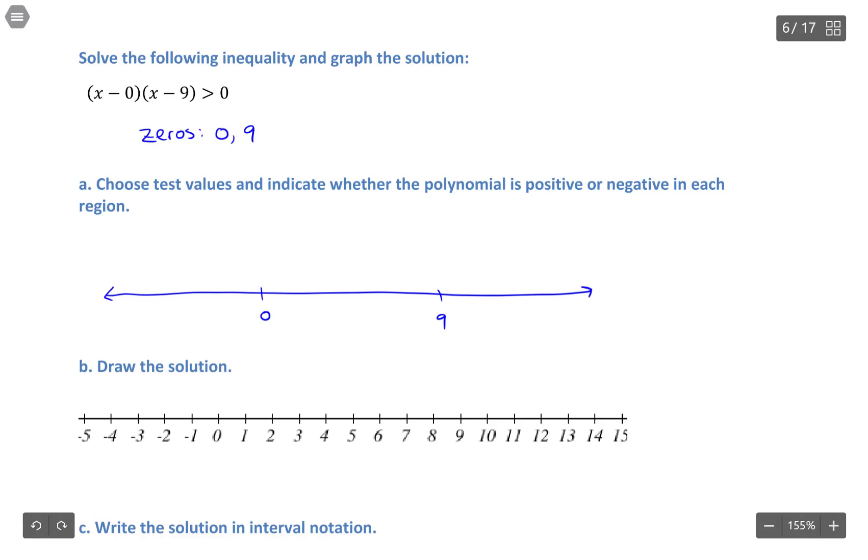Then we're going to choose what are known as test values. These test values are values within the interval itself. For instance, negative one lies on this interval, positive one lies on this interval from zero to nine, and ten lies on this interval.